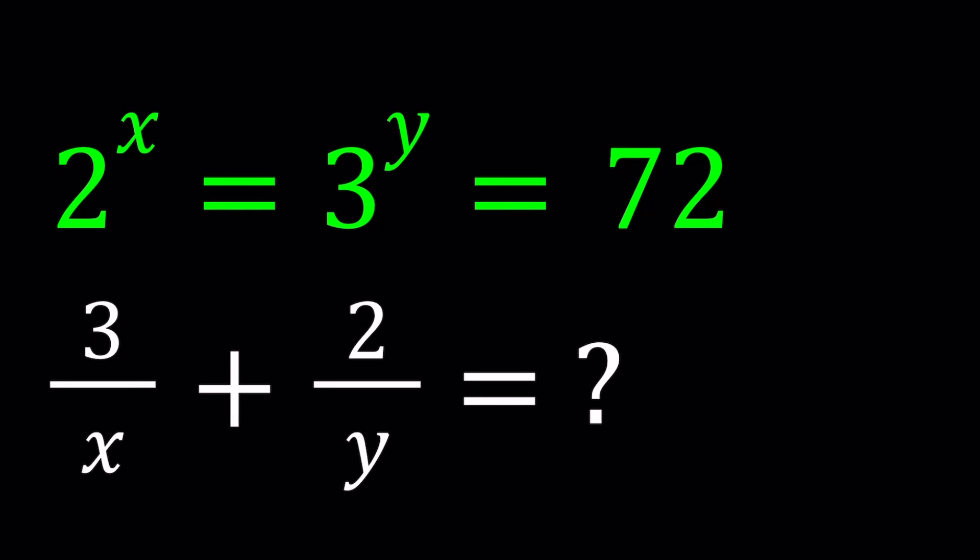Hello everyone, in this video we're going to be solving an exponential system. I'll be presenting three methods and let's start with the first one. So we have 2 to the power x equals 3 to the power y equals 72 and we're supposed to evaluate 3 over x plus 2 over y.